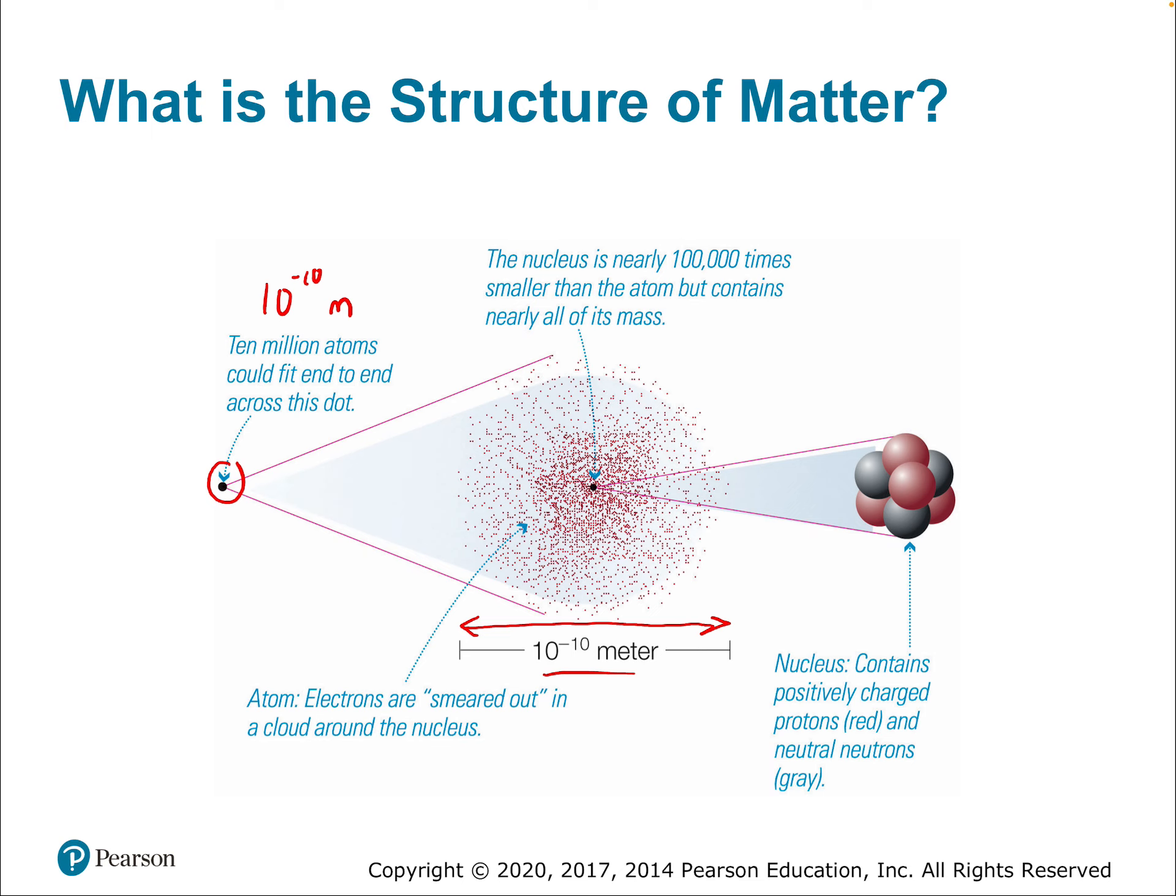If you take one of those 10 million atoms and zoom in on it, you see that most of the space of that tiny diameter is mostly this weird cloud stuff. This is what's called a probability cloud, which is a very abstract idea. But essentially, it's where the electron exists.